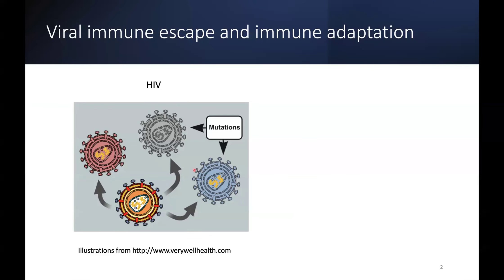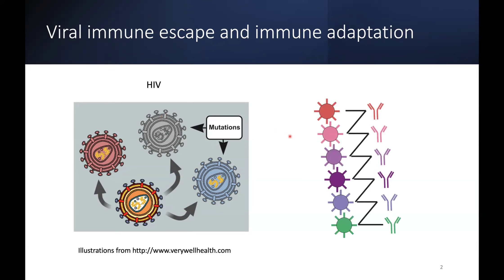Viral antigens can escape antibody recognition. HIV is an extreme example — an infected individual hosts a large repertoire of viral quasi-species expressing mutant proteins. Other viruses like influenza or SARS-CoV-2 are less variable, but their mutations cause severe problems such as breakthrough infections and new pandemics. Neutralizing antibodies are the major arm of immune defense against viral infection. It's generally assumed that when the virus escapes, our immune system makes a new antibody to chase the mutated virus — if we are fast enough, we win; if not, we lose.